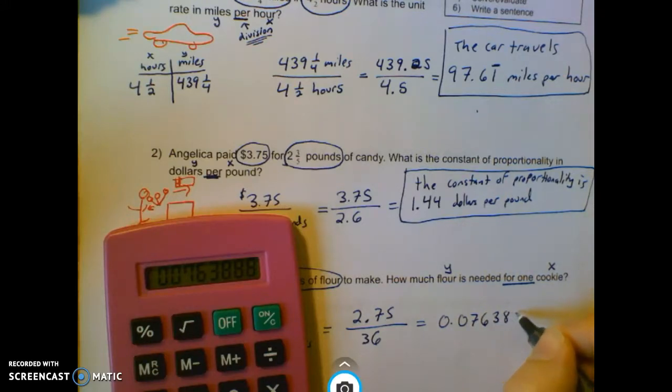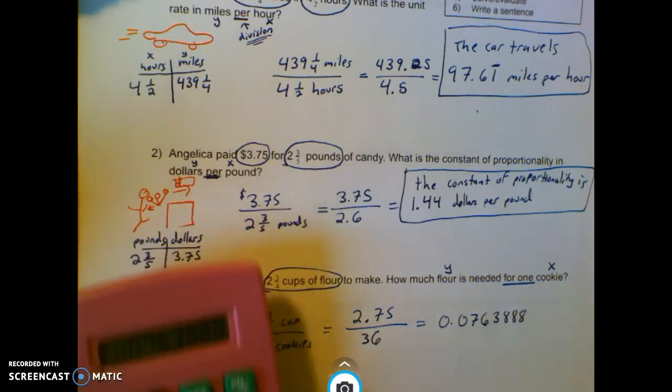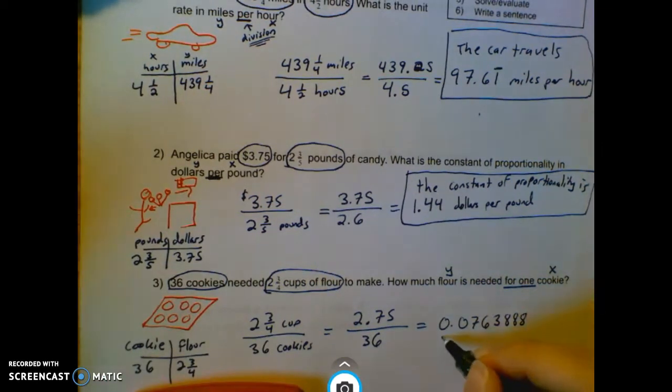So 0.0763888. It's never wrong if you write the whole thing, unless it specifies. So I might as well write out the whole thing. And that is cups of flour per cookie.